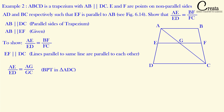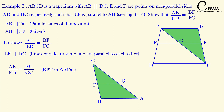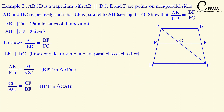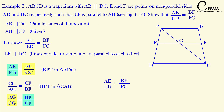Now let's apply BPT in triangle ACB. This is an inverted triangle, so we can rotate it for clarity. Applying BPT gives: CG upon AG is equal to CF upon BF. Observing both equations, AG and GC are common but inverted in the second equation. We rewrite the second equation as AG upon GC is equal to BF upon CF. Now the common components match exactly, so by comparing both equations, we conclude AE upon ED is equal to BF upon FC — which is the answer to our question.